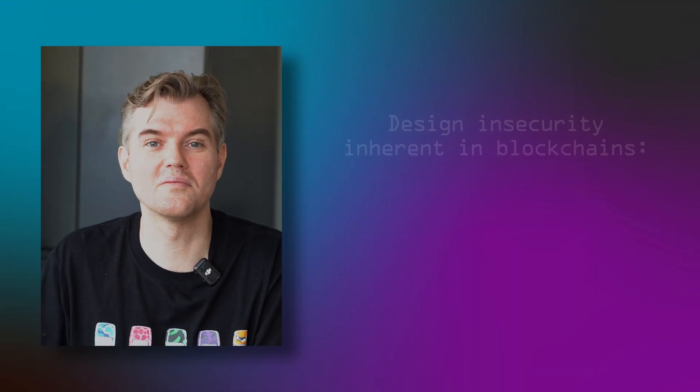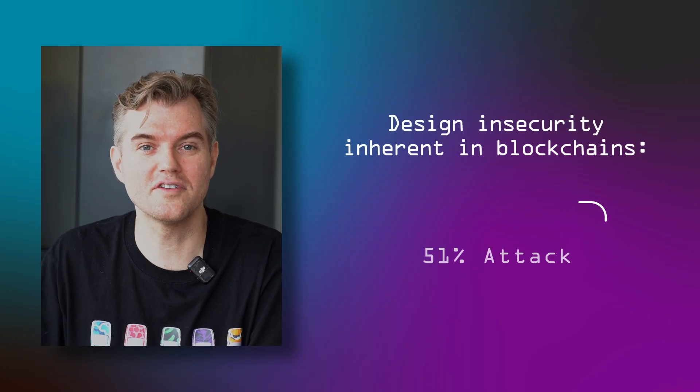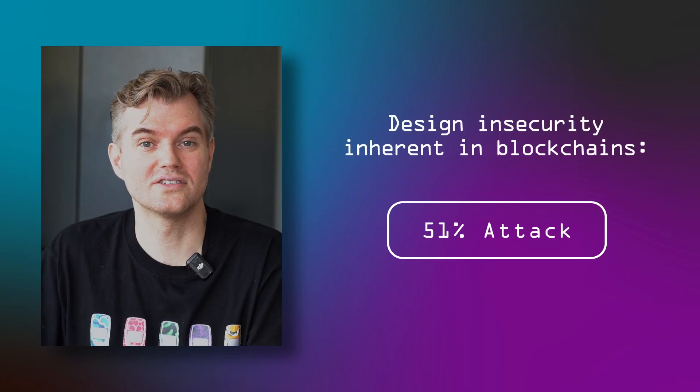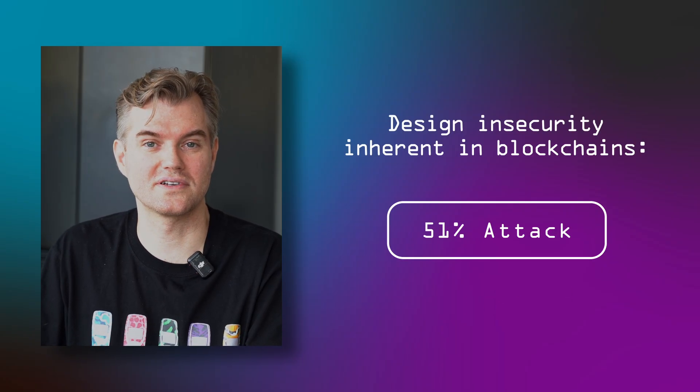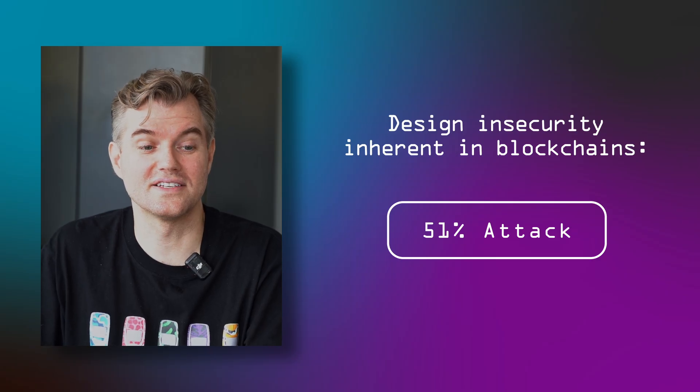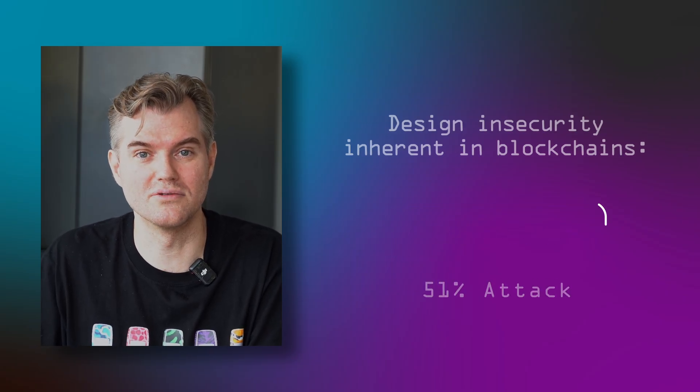Hi, this is Karsten from Hacking Matters, where each week we explore the challenges in cybersecurity. Today we're going back to blockchains and looking at what might be the oldest crypto attack — one that applies to virtually all chains and has already been exploited on some of them. We're talking about the 51% attack, which is embedded in the design of many blockchains. Basically, it's an attack that arises from the majority rule.